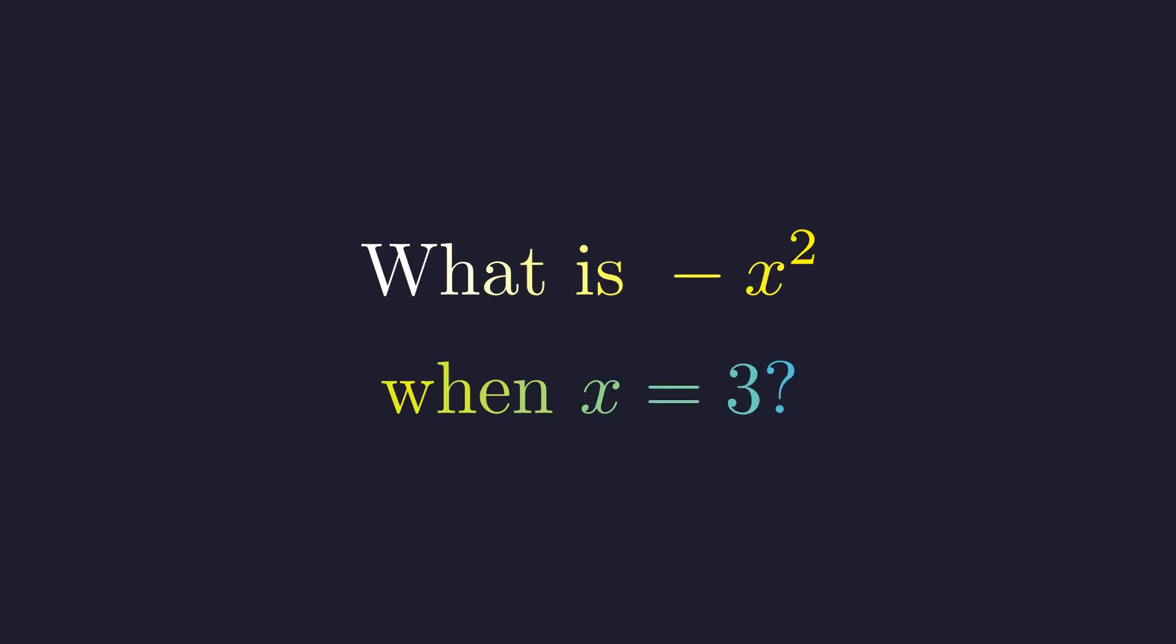Here's a problem that trips up more students than you might expect. What is negative x squared when x equals 3? This might seem straightforward, but there's a subtle detail here that makes all the difference.